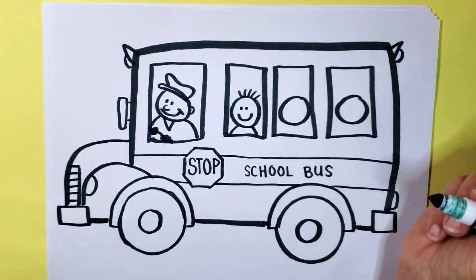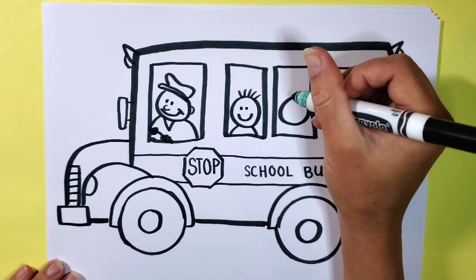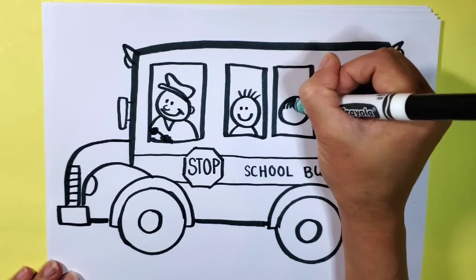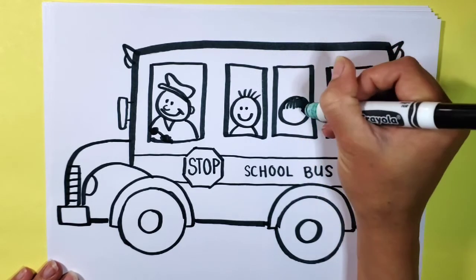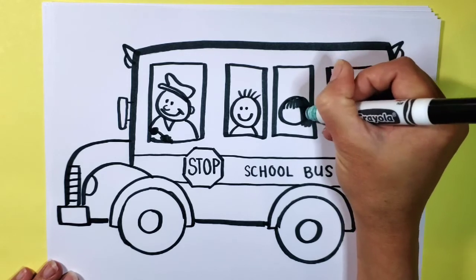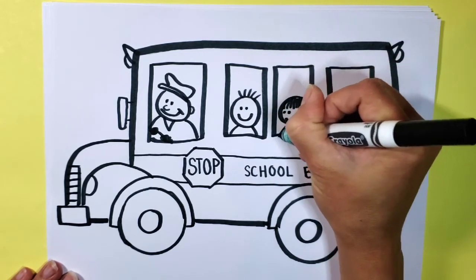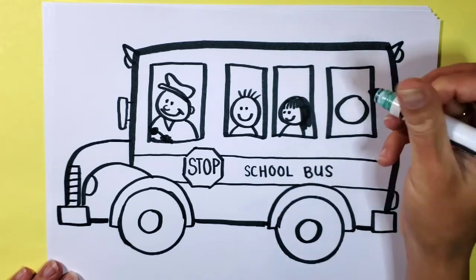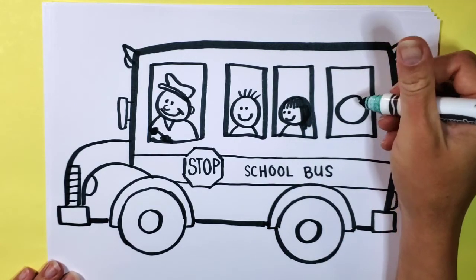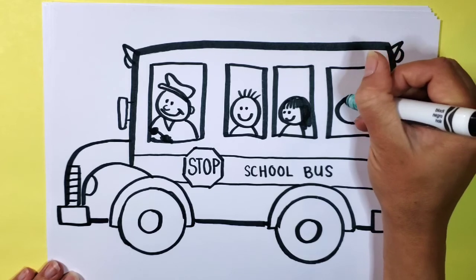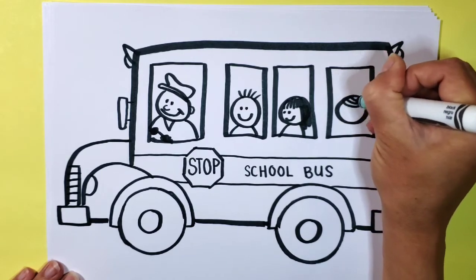If I wanted to do a girl maybe I would give her some bangs and then maybe some longer hair in the back. Give her a little body too. Then maybe we'll do one more in the back here, we can have maybe some hair like this and a little body.